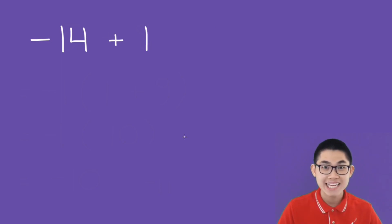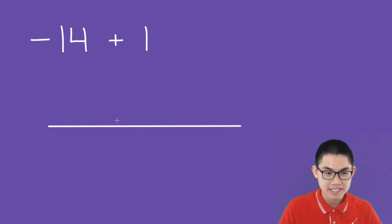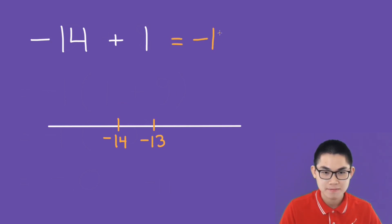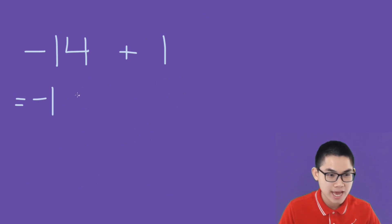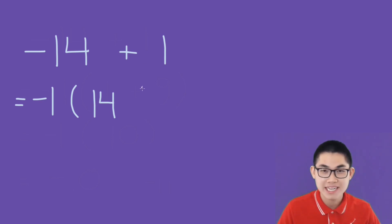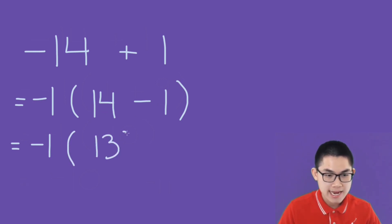How about negative 14 plus 1 using the number line method? We draw our line and start at negative 14, then we move to the right one time. This gives us negative 13. Let's try this problem again using the second method. We factor out negative 1, so negative 14 becomes positive 14 and positive 1 becomes negative 1. This is equal to negative 1 times 14 minus 1, which is 13. And negative 1 times 13 gives you negative 13.